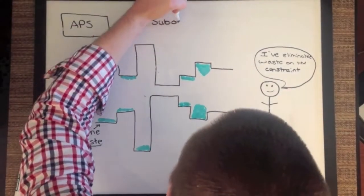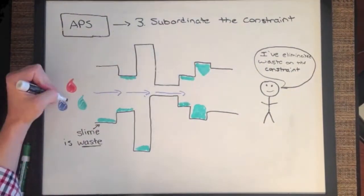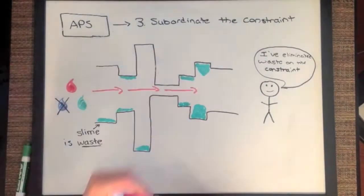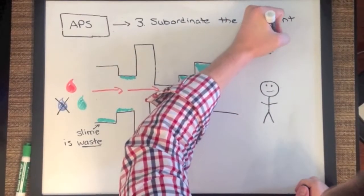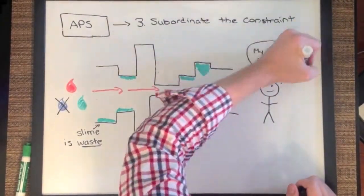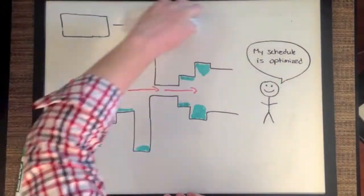After removing the slime from the constraint, you use Advanced Planning and Scheduling to subordinate the constraint. In the pipe example, this means using the entire diameter of the thinnest section of the pipe as much as possible. Therefore, when you have to switch from pumping blue water to pumping red water, Advanced Planning and Scheduling will optimize the schedule and communicate all the steps using its visual collaboration tool to ensure the color change goes smoothly.